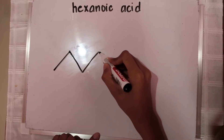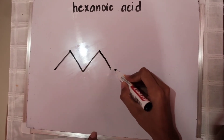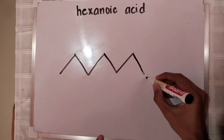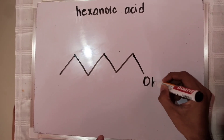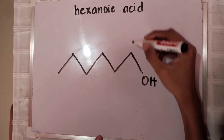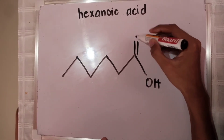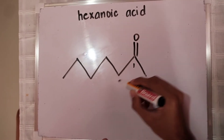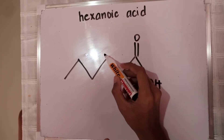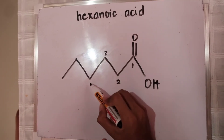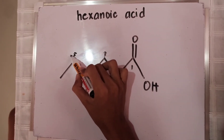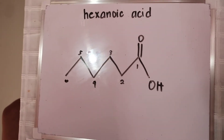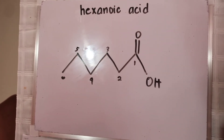We have hexanoic acid. To draw its structure, we start by its parent chain which has 6 carbons since its name is hexa, and we have to add the functional group of carboxylic acid, which is the COOH group, to the end of the parent chain.